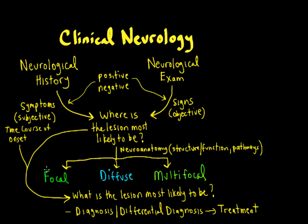Now, if we put together focal, diffuse, and multifocal — multifocal being just multiple focal lesions — and we know the time course of onset, we can figure out what the lesion most likely is, giving us the differential, diagnosis, and treatment. That's going to help us move forward with categorizing neurological disease. And that concludes this video on neurological lesion localization.